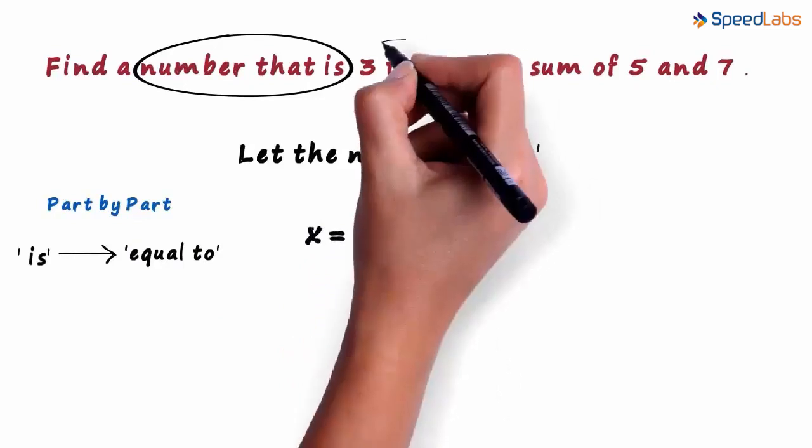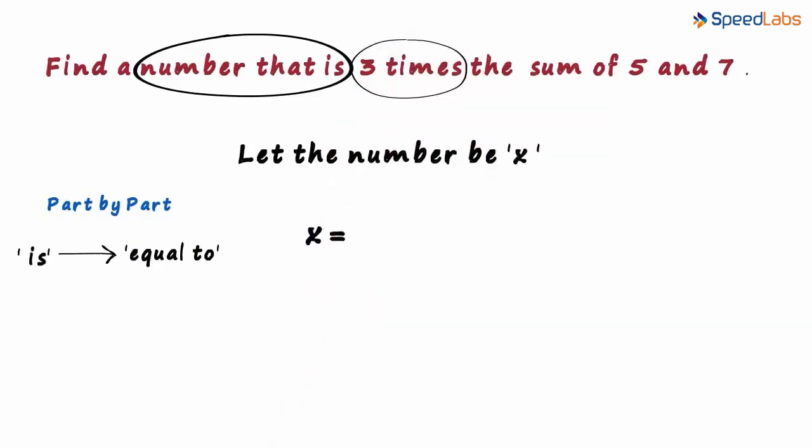The next part is 3 times. It means 3 multiplied by. 3 multiplied by what? The sum of 5 and 7. So we write 5 plus 7 here. Do not forget the brackets. Without the brackets, it will have a completely different meaning. It is 3 multiplied by the entire sum.